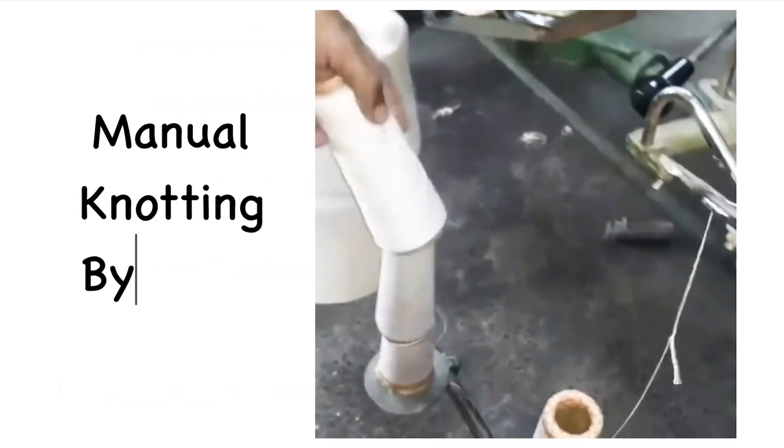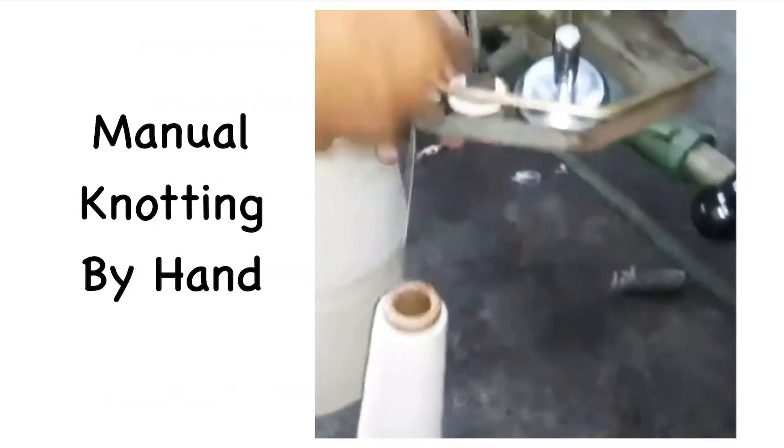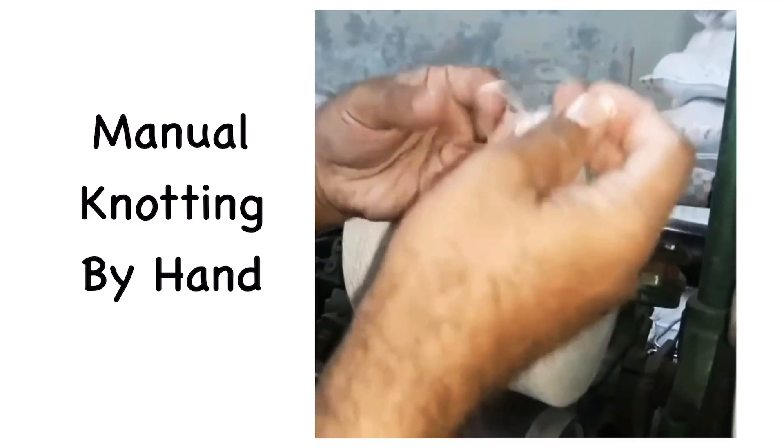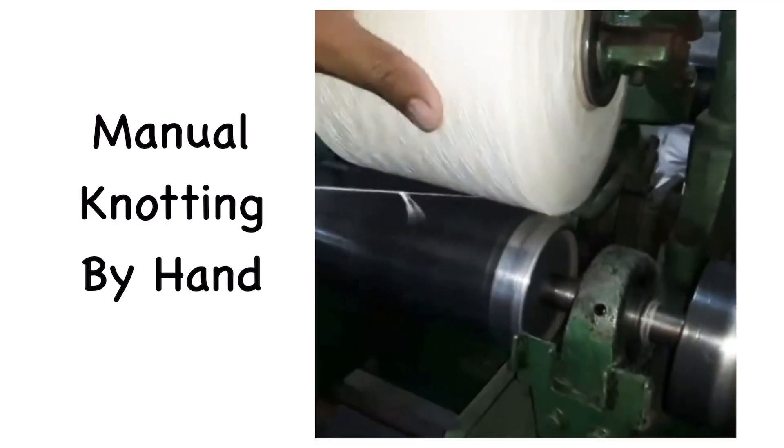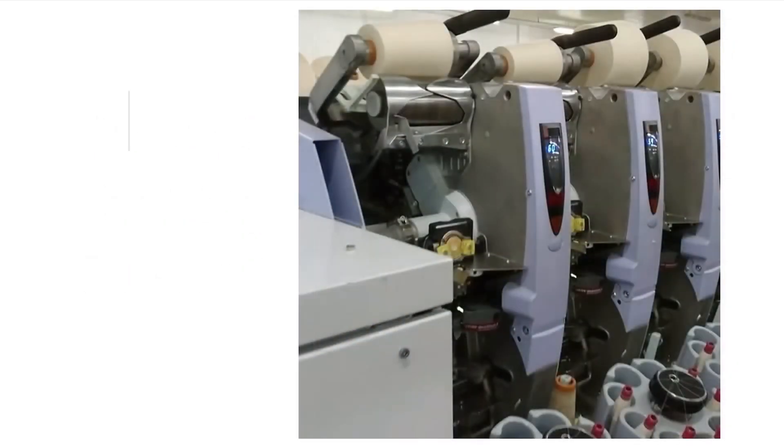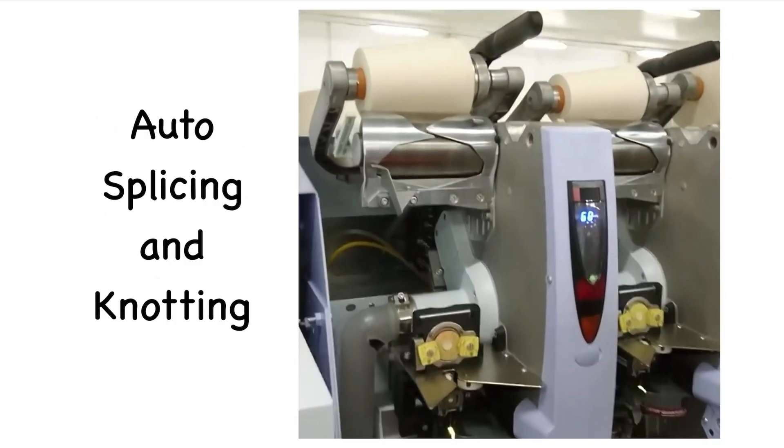In manual winding machines, the small packages are joined together using manual knots. Also when the yarn is spliced or torn, then the yarn is joined by hand knots. In more modern machines, the splicing and joining of torn yarn is done automatically by the machines.